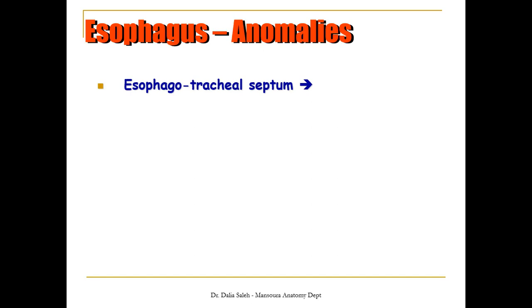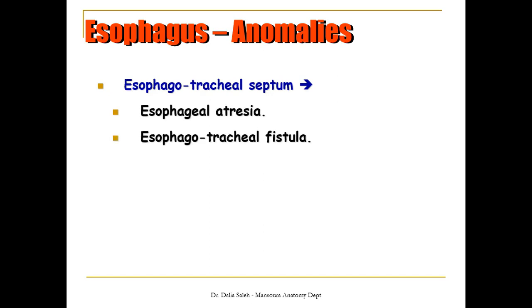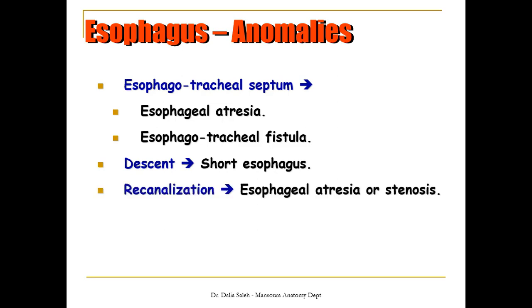Regarding esophageal anomalies, we can have anomalies during the formation of the tracheoesophageal septum, leading to esophageal atresia or tracheoesophageal fistula. Also, if there is an abnormality during the elongation of the esophagus, we could end up with a short esophagus. Additionally, anomalies in the process of recanalization can result in esophageal atresia or stenosis. Finally, abnormalities regarding innervation of one segment of the esophagus can lead to what is called mega esophagus.